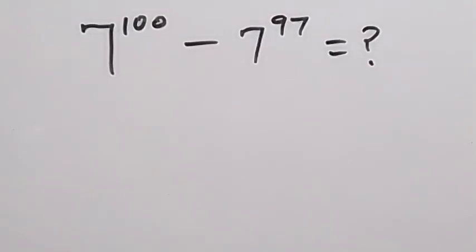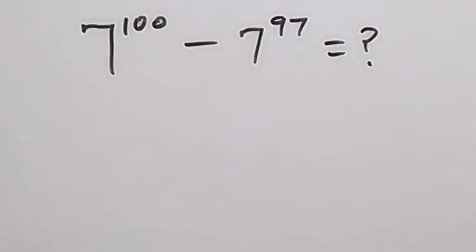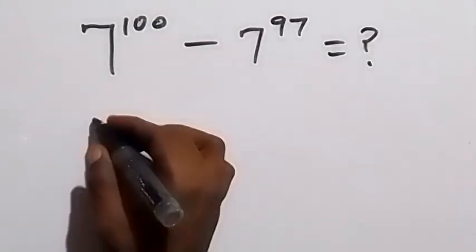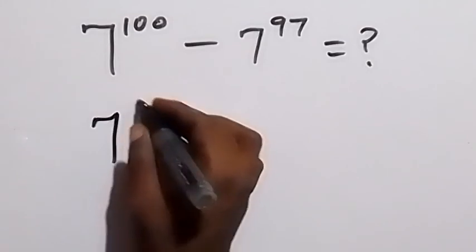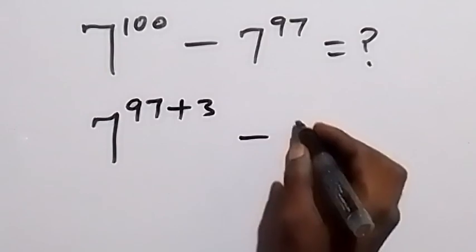Hello, you are welcome. How to simplify this problem without using a calculator. From here we can rewrite 7 raised to power 100, and we separate this and we become 7 raised to power 97 plus 3, then minus 7 raised to power 97.